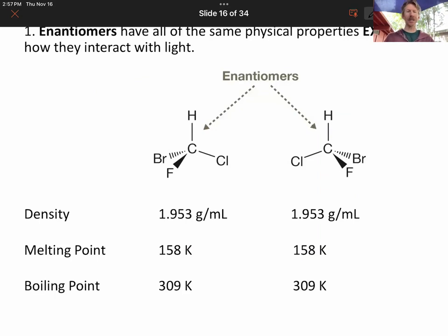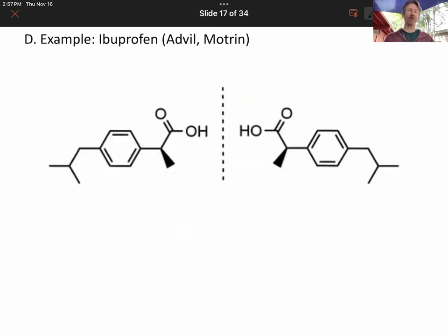Another key thing about enantiomers is that all of their physical properties are exactly the same, meaning their densities, their melting points, their boiling points, their heats of fusion. So all of those properties that we used to talk about in first semester general chemistry, when we were talking about intermolecular forces, heats of fusion, heats of vaporization, they're all the same, except how they interact with light.